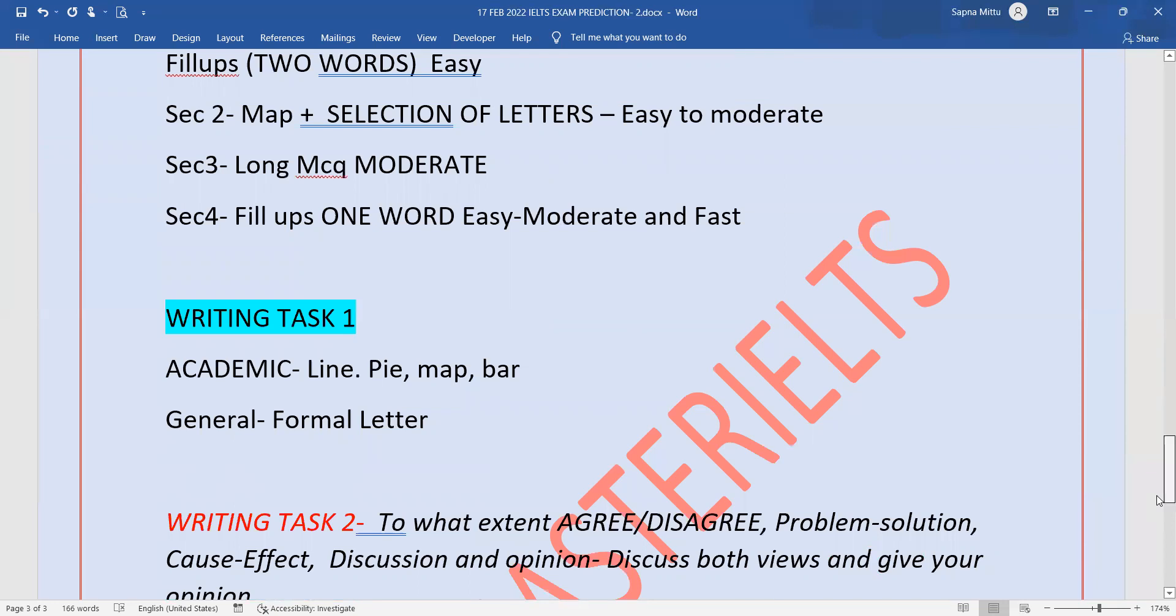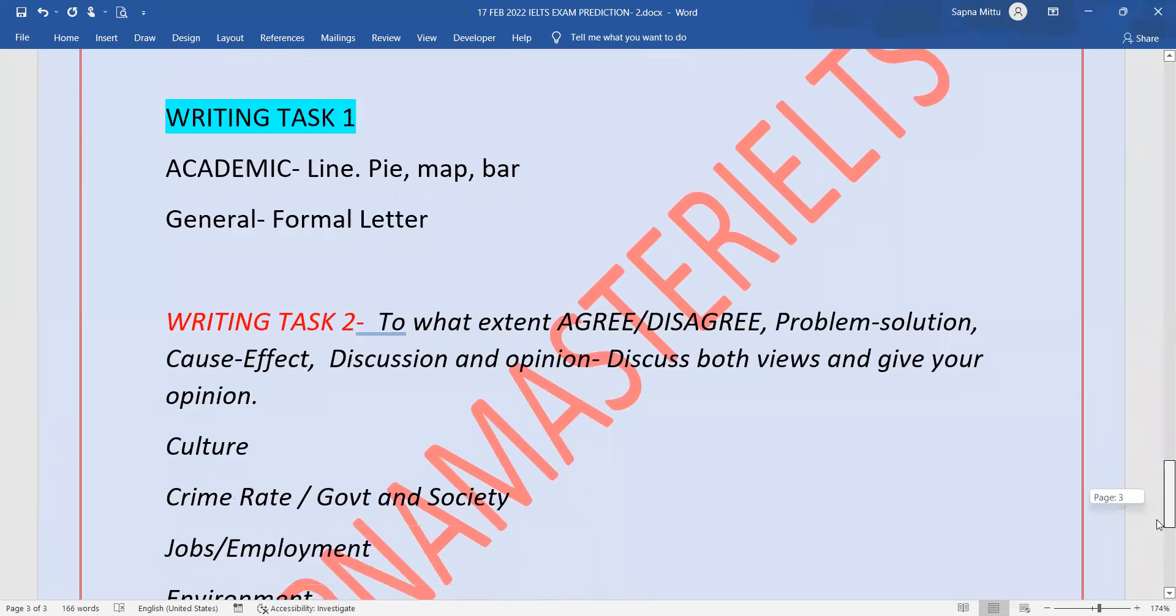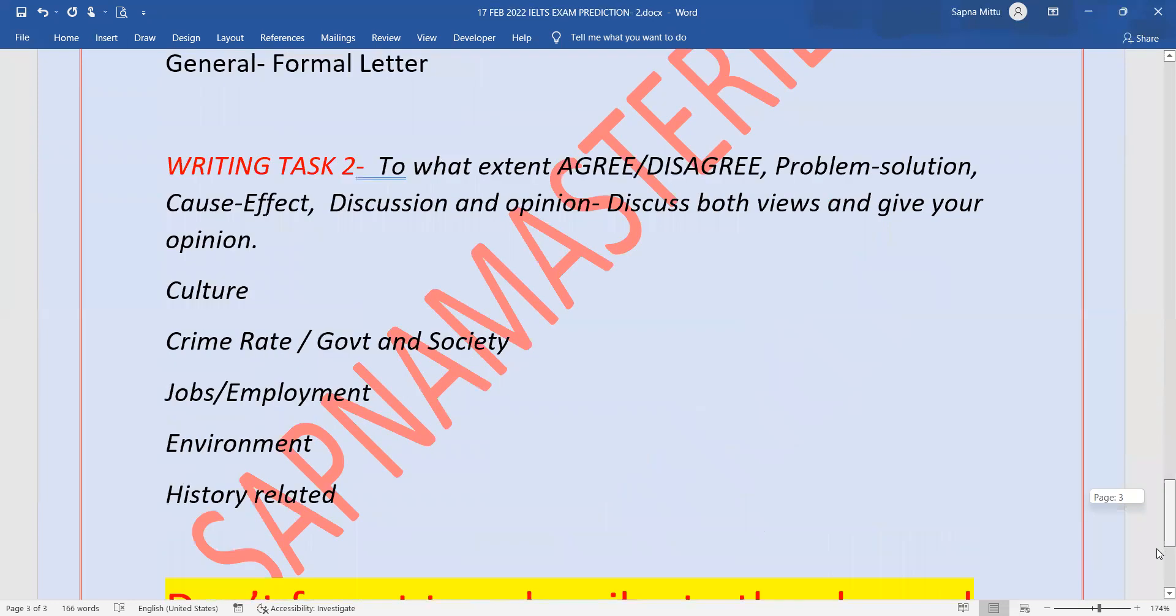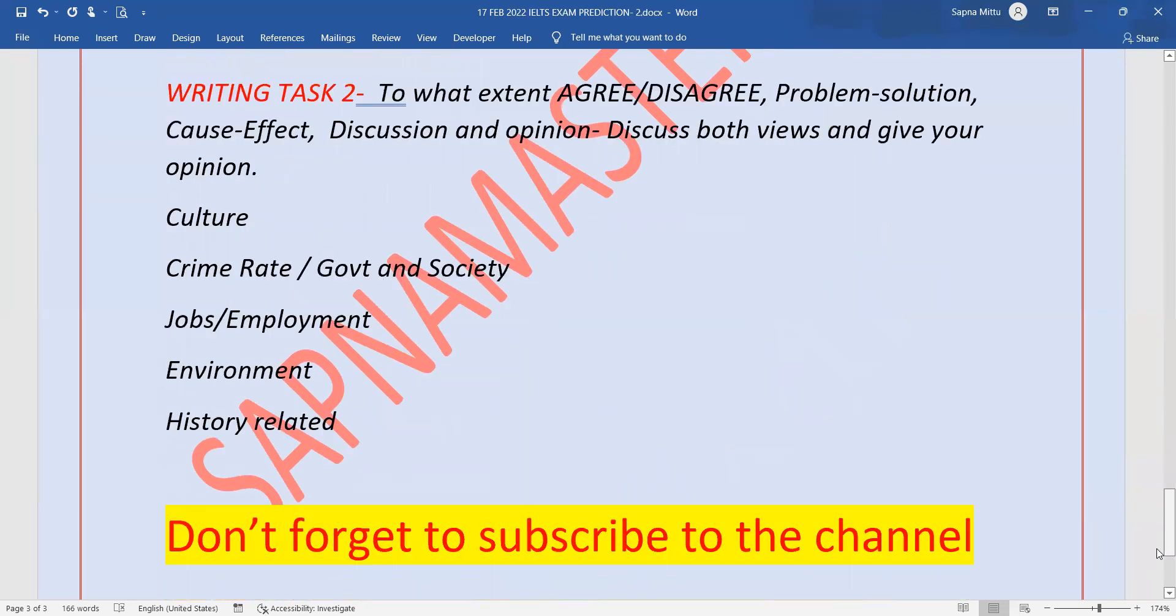What topics can come? The topics we've seen so far: parenting has come, children-related has come, family-related has come, crime-related has come. Here's another list: culture, crime rate, government and society, jobs-related, environment or history-related. History and culture are similar.